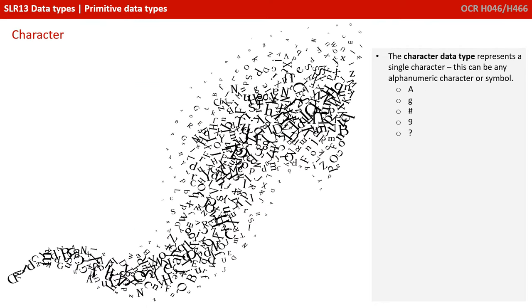The character data type, as the name suggests, represents a single character. This can be any alphanumeric character or symbol from a character set — it doesn't have to be a letter.